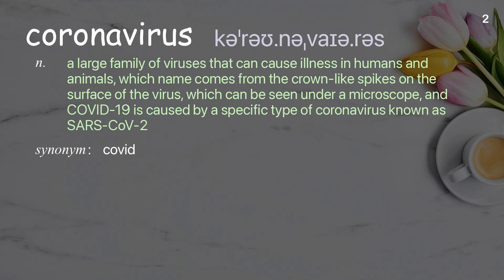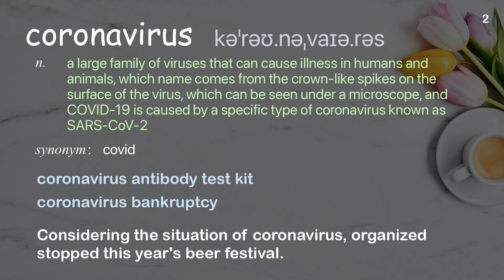Coronavirus: a large family of viruses that can cause illness in humans and animals, which name comes from the crown-like spikes on the surface of the virus, which can be seen under a microscope. COVID-19 is caused by a specific type of coronavirus known as SARS-CoV-2. Examples: coronavirus antibody test kit, coronavirus bankruptcy. Considering the situation of coronavirus, organizers stopped this year's beer festival.